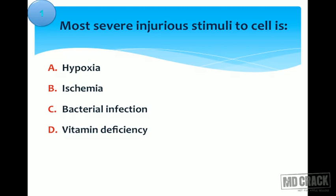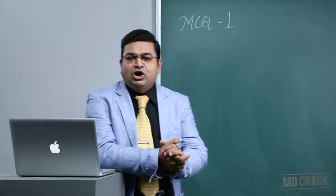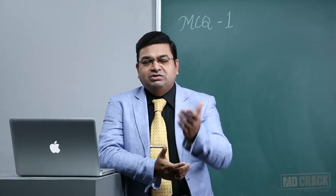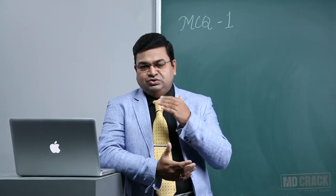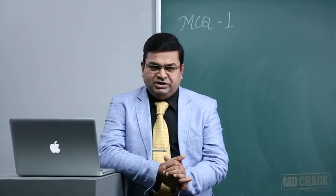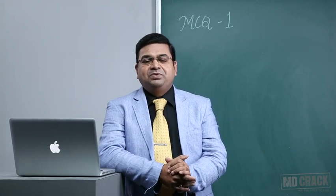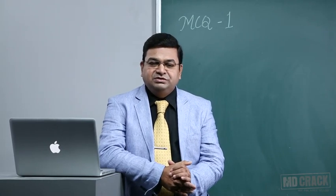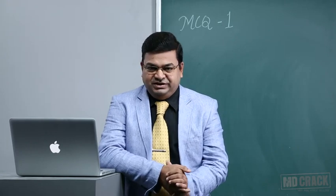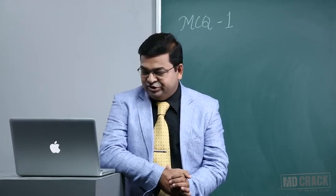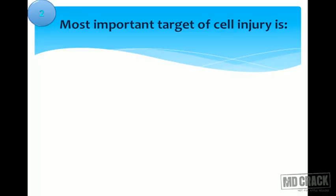Vitamin deficiencies A, B, C, D, E can also cause injury. But the most severe injurious stimulus is ischemia — lack of blood supply — because it not only hampers tissue oxygenation but also decreases glucose supply to the tissues. So ischemia is more severe than hypoxia. The answer is ischemia.